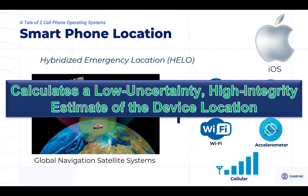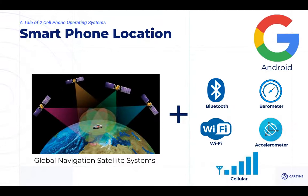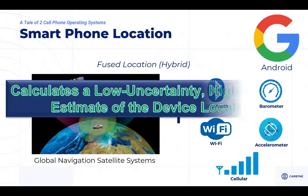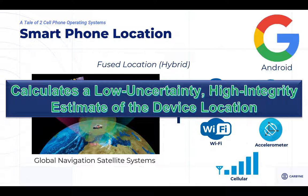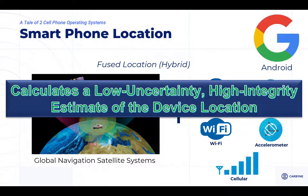Google's approach is surprisingly similar. They look at the same kinds of information — GPS, Bluetooth, Wi-Fi connection, barometer, accelerometer, and cellular connection. Their version of the calculation is basically a fused or hybrid location. Their goal is exactly the same — if you look at the white papers that both companies published, they both use the term 'calculate a low-uncertainty, high-integrity estimate of the device location.' Those are the two main characters in this. There's a third alternative I'll talk about, but it's not used in the United States.